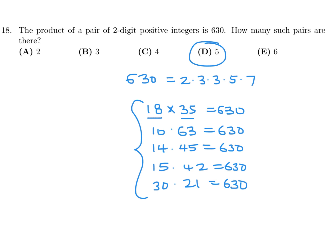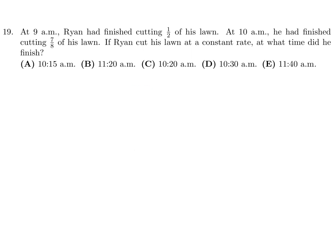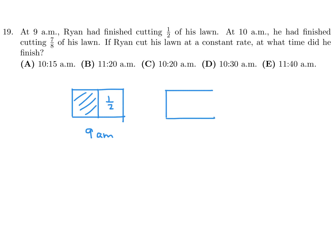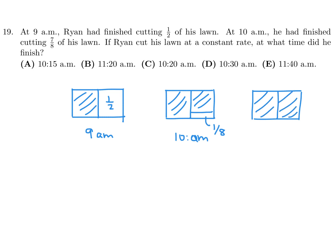At 9 a.m. Ryan had finished cutting half of his lawn. At 10 a.m. he had finished seven-eighths. If he cuts at a constant rate, what time did he finish? At 9 a.m. half is done; by 10 a.m. seven-eighths is done, so he cut three-eighths in one hour. The remaining amount is one-eighth.